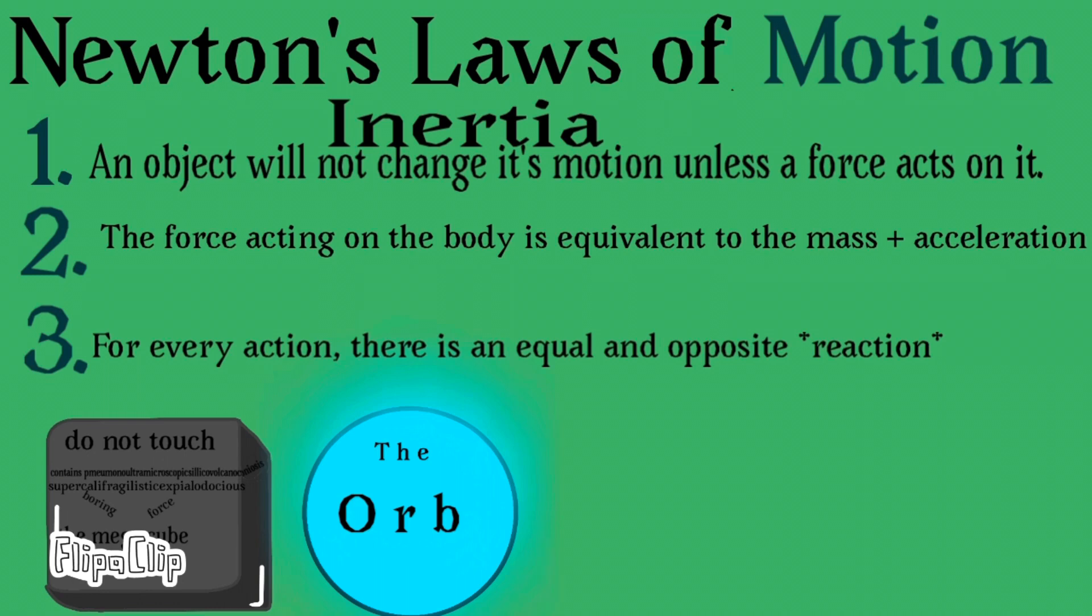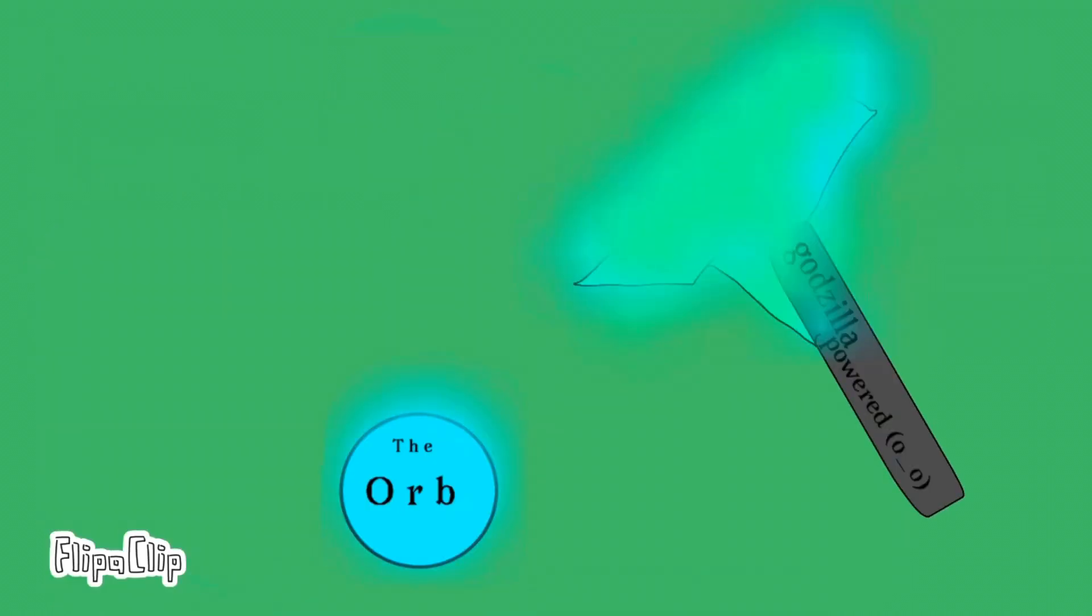All right. Well, the first law is that an object will not change its motion unless a force acts on it. If we use an object to hit the orb, well, it's going to move, right? But it wouldn't have moved unless it was hit.